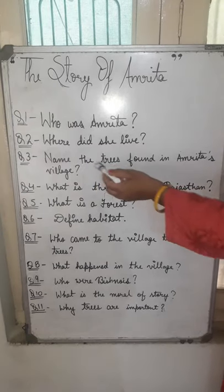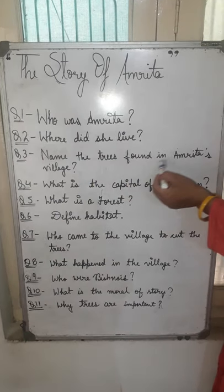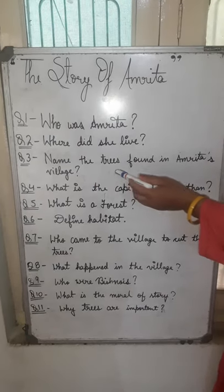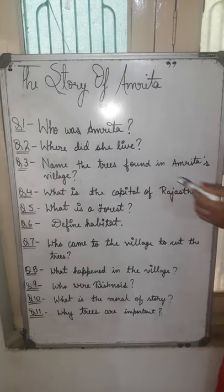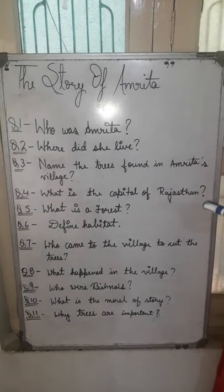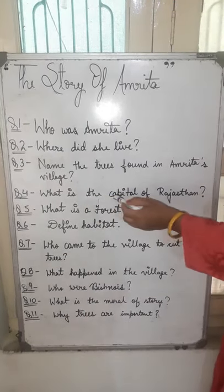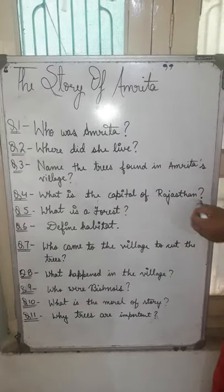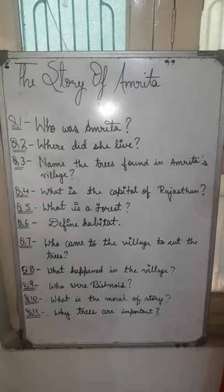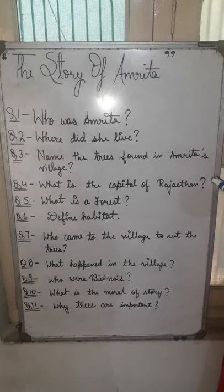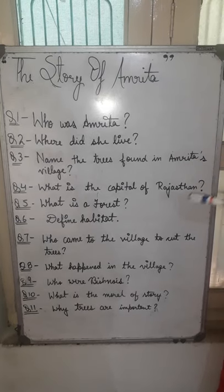Name the trees found in Amrita's village. The trees found in Amrita's village were Khejli trees. What is the capital of Rajasthan? The capital of Rajasthan is Jaipur.